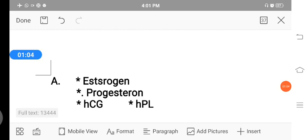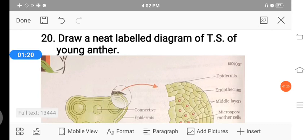One is estrogen, progesterone, HCG that is human chorionic gonadotropic hormone, and HPL, human prolactin hormone. Next, the 20th question.